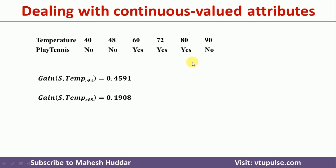This is how we can convert a continuous valued attribute into a discrete valued attribute. I hope this concept is clear. If you like the video, do like and share with your friends. Press the subscribe button for more videos and the bell icon for regular updates.